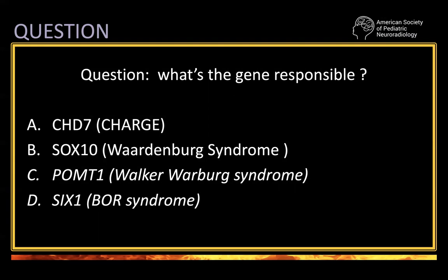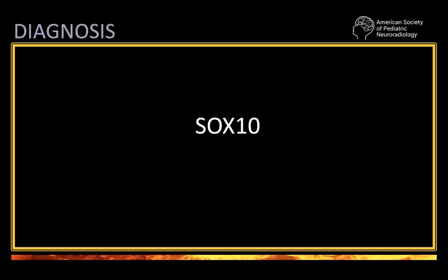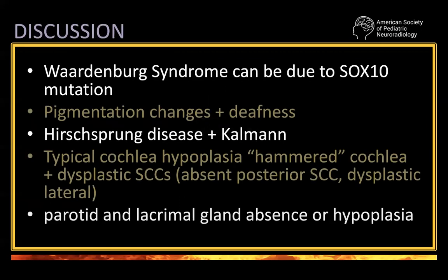Please don't Google it. The answer is: this is a SOX10 mutation. This is my teaching point — Waardenburg syndrome can be due to several genes. But when it's SOX10, it's a typical combination of Hirschsprung and Kallmann. They have pigmentation changes and a typical incomplete cochlea. The cochlea has all the gyri, but they are a bit squashed. Some abnormalities in the semicircular canals — not all absent, but the posterior semicircular canals are typically absent, and dysplastic lateral semicircular canals. There is variability.